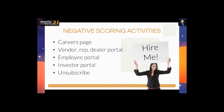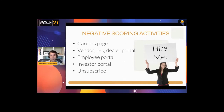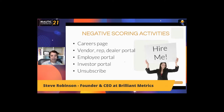There are also negative scoring activities — things you set up in MAUTIC to decrement points for a given contact. Key ones include careers pages: job seekers will bounce all over your website and trip every scoring tripwire if you don't set up a negative score there. Also vendor, rep, or dealer portals — your existing customers probably shouldn't be scored as MQLs unless needed for resales. Employee portals and investor portals are the same. If somebody unsubscribes, that's a drop in trust, so you also want to decrement their score.